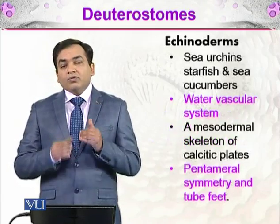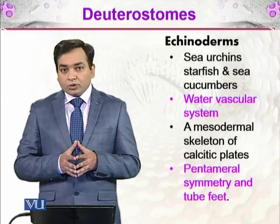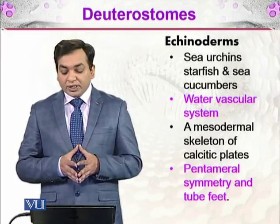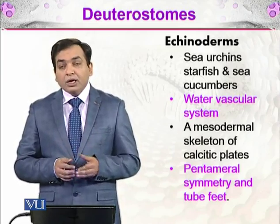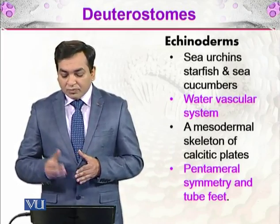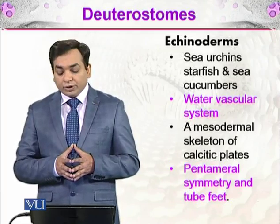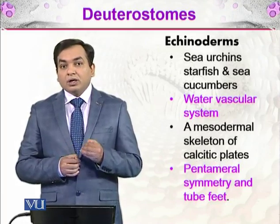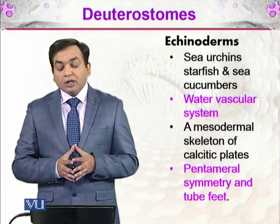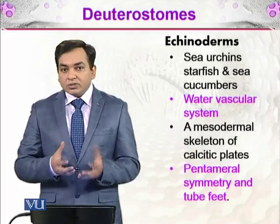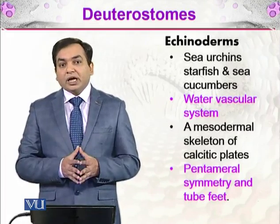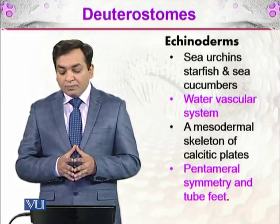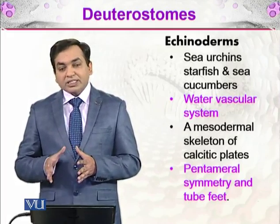The first type of deuterostomes are the echinoderms, and the other are the hemichordates. First we will discuss the echinoderms. Echinoderms include starfish and sea cucumber, and they have a very specialized system called the water vascular system, which we will discuss in detail later. They also have a mesodermal skeleton of calcite plates.